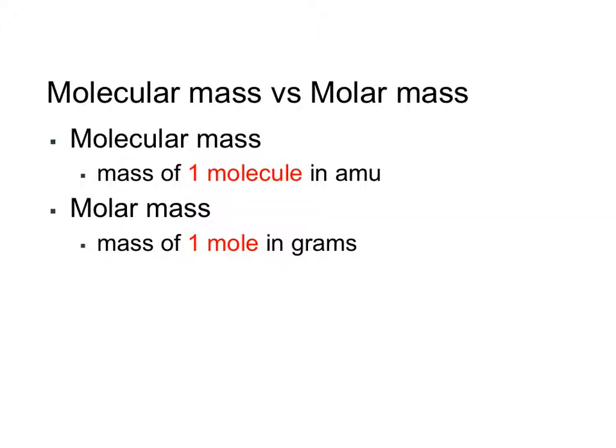We discussed molecular mass earlier in the chapter as being the mass of one molecule of something in AMUs, atomic mass units. Remember that one atomic mass unit is equal to one-twelfth the mass of carbon-12. We're going to expand that view now and think of molar mass. The molar mass of an atom or a compound is simply the mass of one mole of that atom or compound in grams. Earlier we looked at atomic weight on the periodic table and defined it in terms of AMUs; now we're going to think in terms of molar mass. For instance, carbon has a molar mass of 12.01.